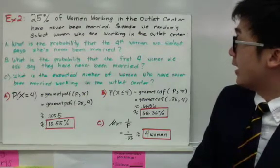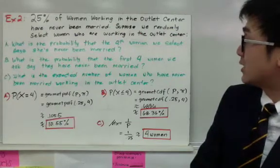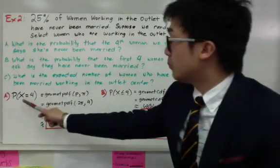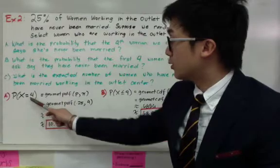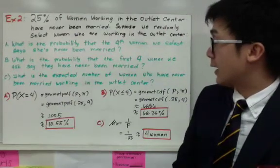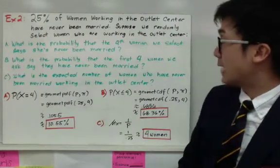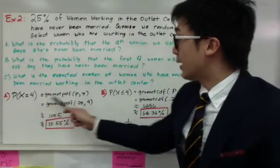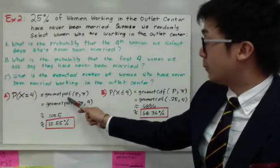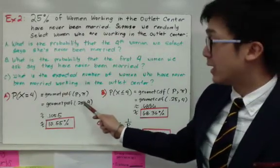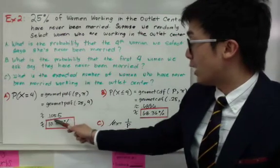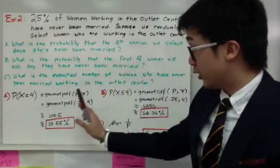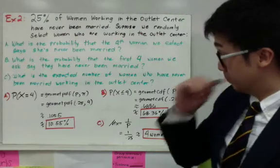For letter A, let's start with: what is the probability that the fourth woman we select says she's never been married? In this particular geometric probability, it's going to be P of x equal to 4. X equals 4 because we're asking about the exact fourth woman and her answer is she's never been married. Our geometric PDF will be P and x. Using the TI-84 calculator, we'll get an answer of 0.1055. That's how to use the graphing calculator or TI-84 to get the answer for letter A.